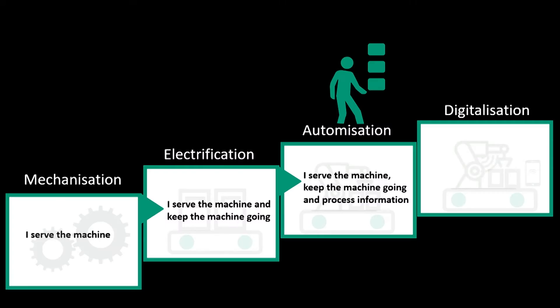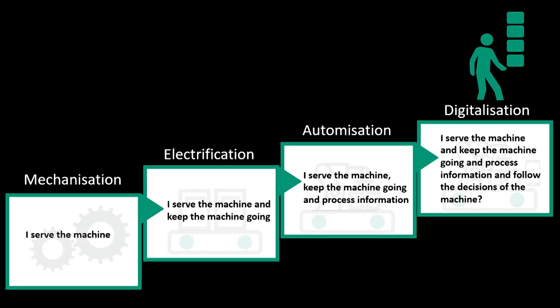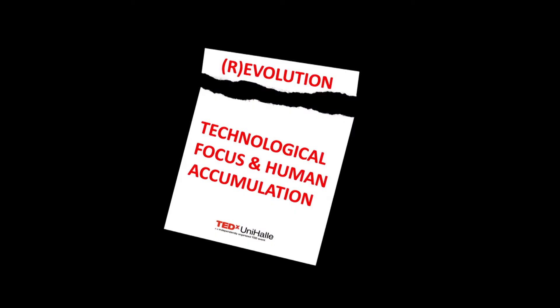As a logical consequence of this development, do humans today serve the machine, keep it going, process information, and follow the decisions of the machine? Is this the system we are running into — losing our tasks and losing our sense of being active? History has shown that machines took over more and more operations formerly executed by humans. First they controlled just a specific production part, but over time they assumed more and more activities. So we witness that the industrial revolution turns out to be an evolution with technological focus and human accumulation.